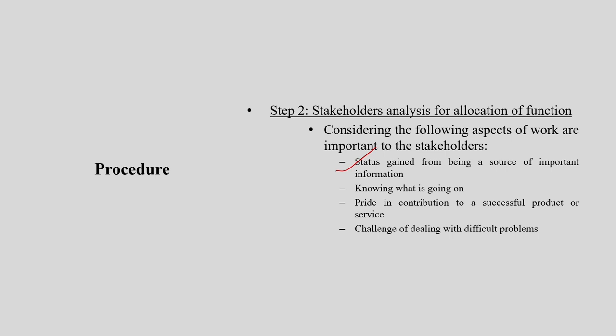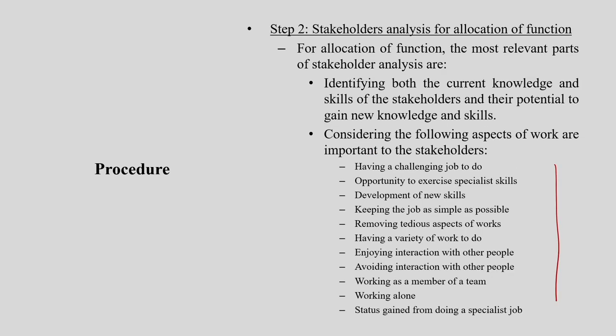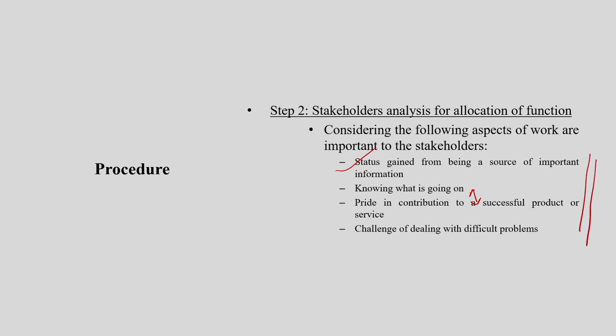Further important aspects include: knowing what is going on and how proactively they are involved in the whole system; pride in contribution to a successful product or service — which is very much connected to the previous point; and the challenge of dealing with difficult problems. These are the specific components to consider during stakeholders analysis in function allocation.